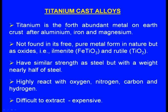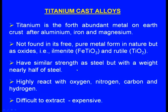Next, we will see the titanium cast alloys. Titanium is the fourth most abundant metal in the earth's crust after aluminum, iron and zinc. It is not found as a pure metal in nature but is available as oxides. It has got similar strength as steel but with a weight nearly half of steel — this is the greatest advantage.